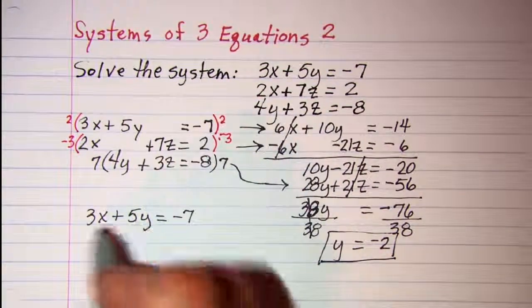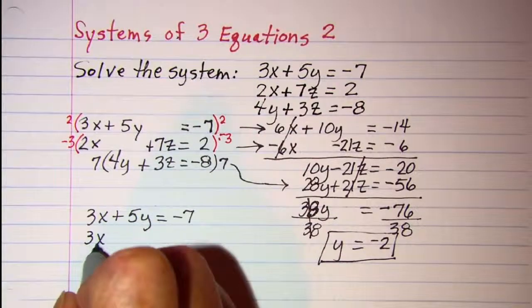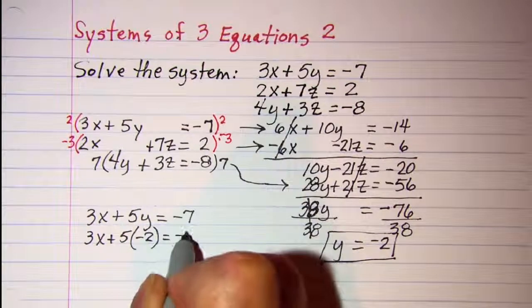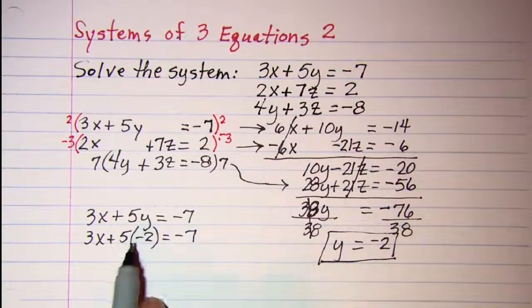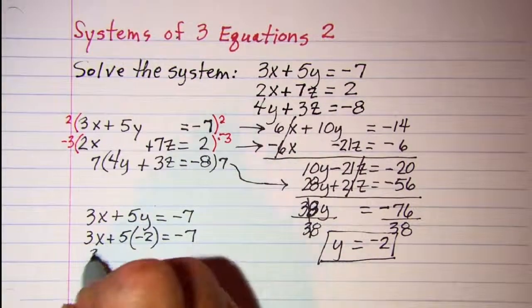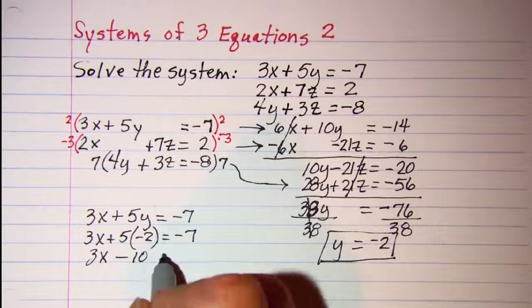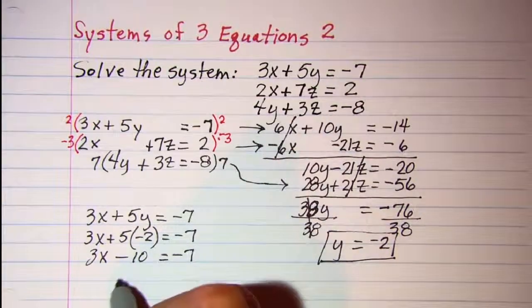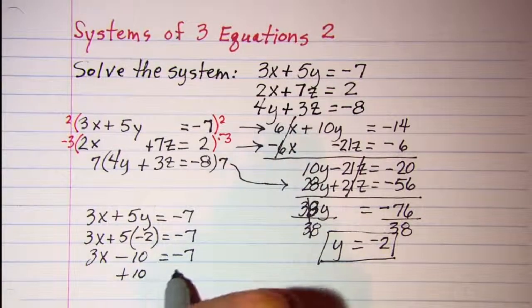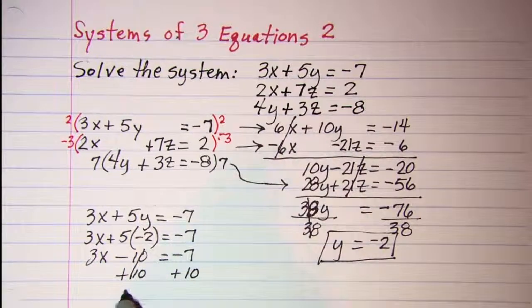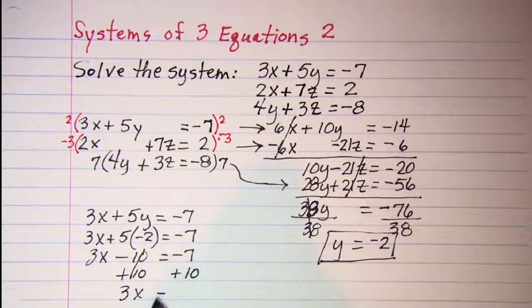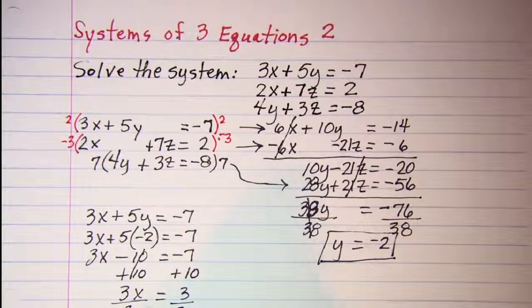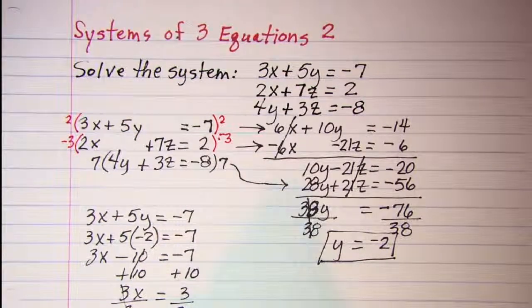3x - 10 = -7. Add 10 to both sides: 3x = 3. Divide by 3: x = 1.